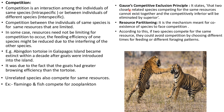Gause's competitive exclusion principle states that two closely related species competing for the same resources cannot coexist — the competitively inferior will be eliminated by the superior. For example, a cheetah versus a tiger or lion: both compete for the same resources and the superior (tiger/lion) will outcompete the inferior (cheetah). Resource partitioning is a mechanism for coexistence: if two species compete for the same resources, they can avoid competition by choosing different times for feeding or different foraging patterns.